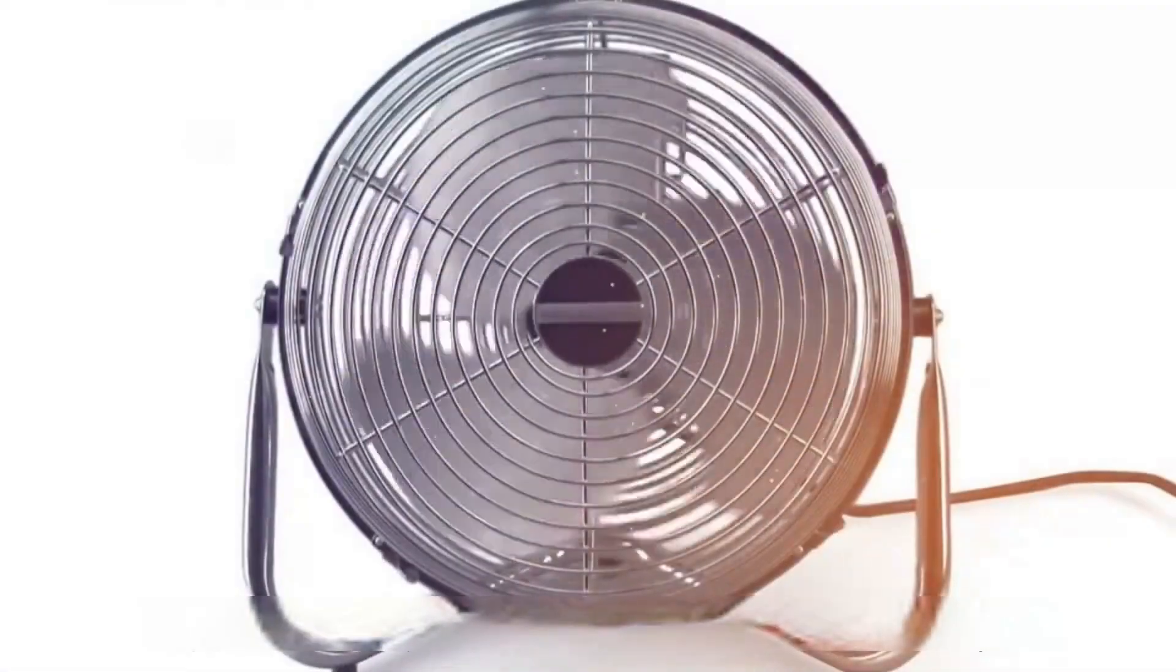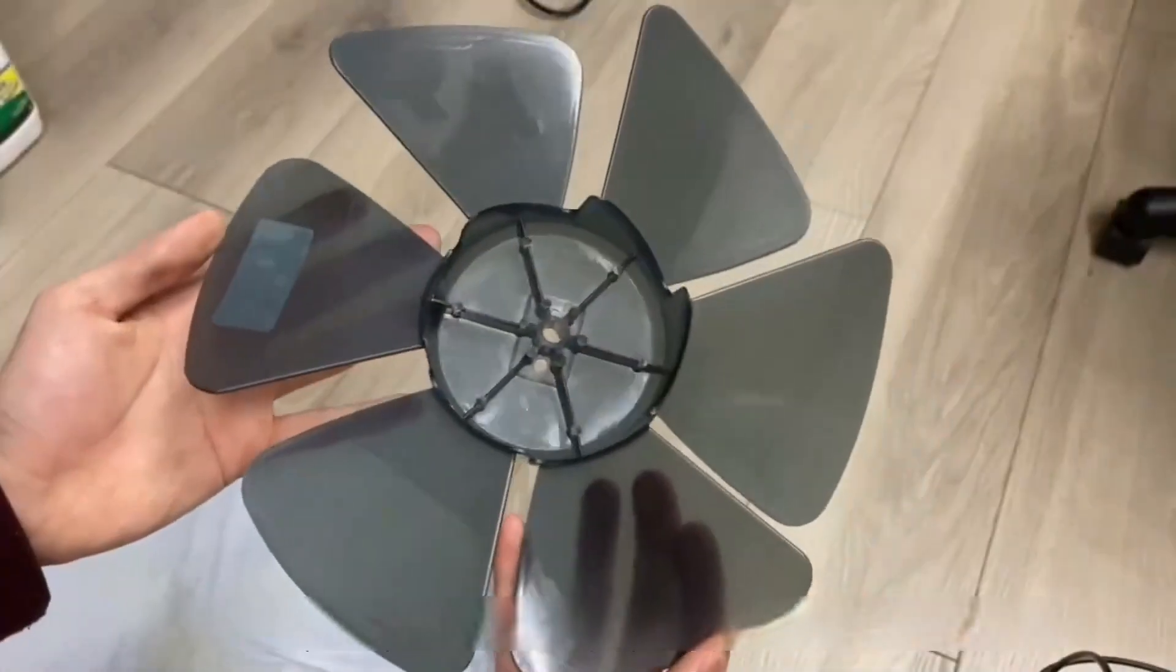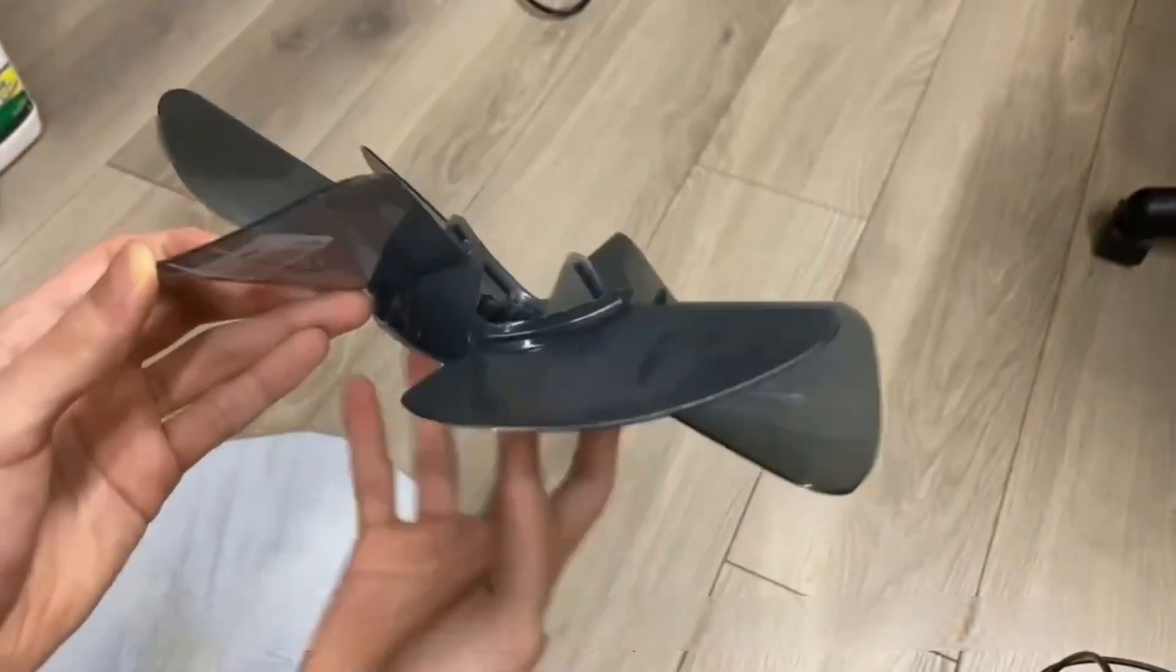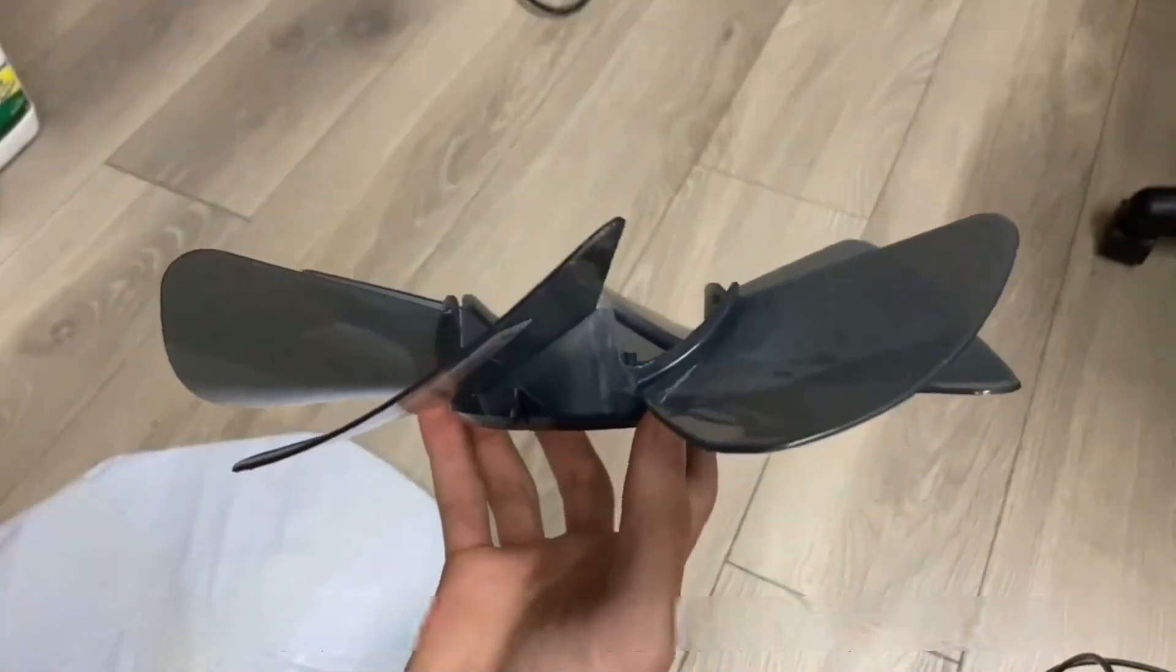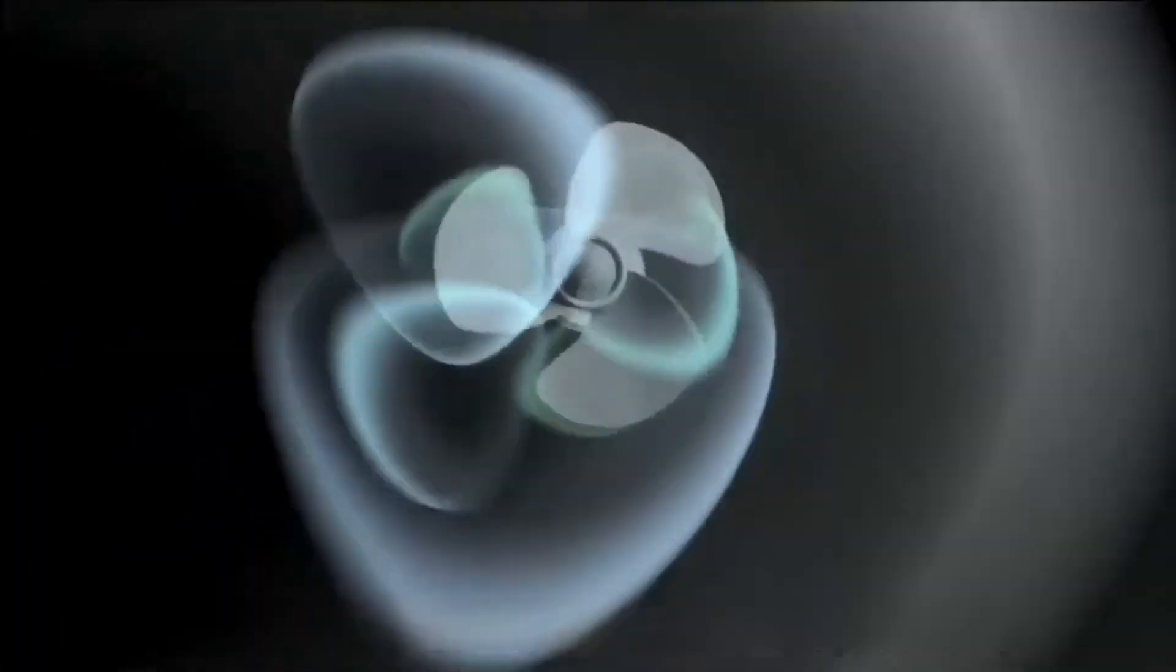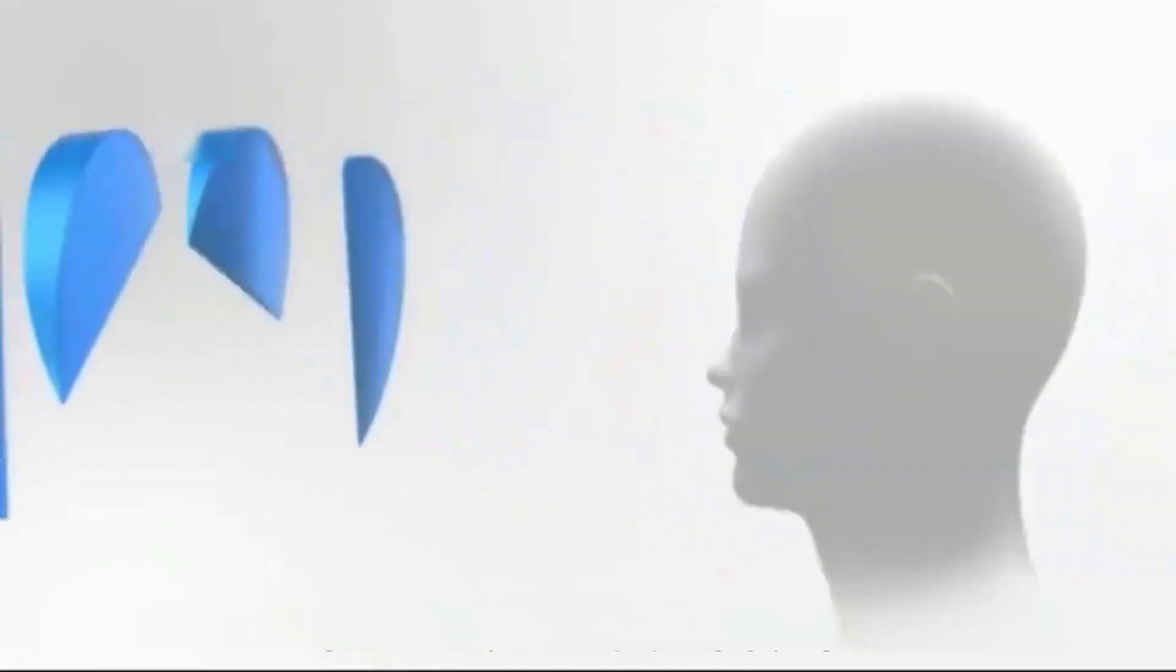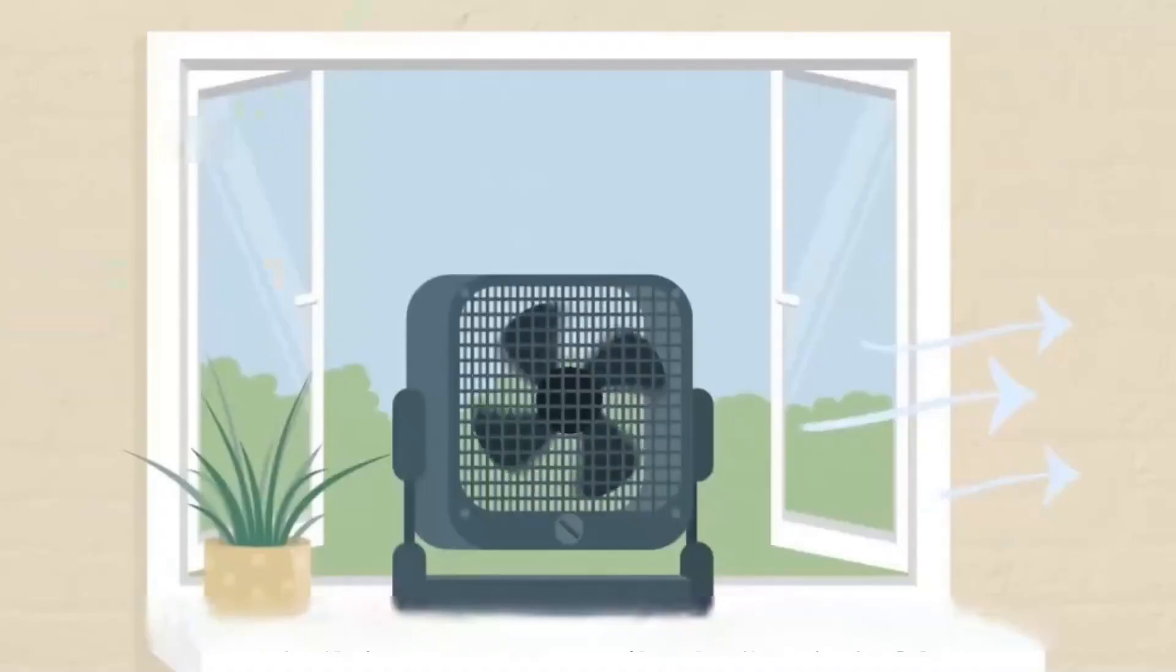We usually use ordinary fans composed of multiple fan blades. You will find that the blades are not flat but have curved surfaces. When the fan rotates, this shape can cut the air near the blades and push it forward, thus constantly bringing us a cool breeze. As part of the air is pushed away by the fan blades, the air behind the fan will be continuously sucked into the fan. This is the working principle of the ordinary fan.